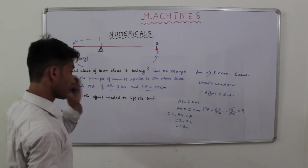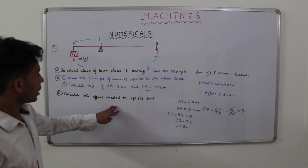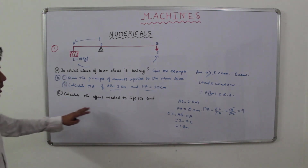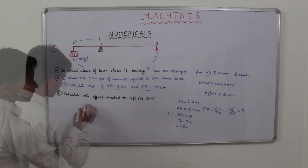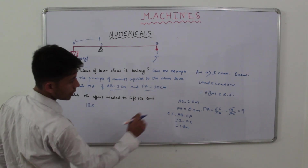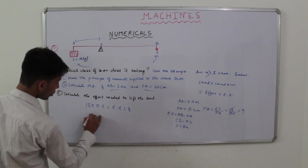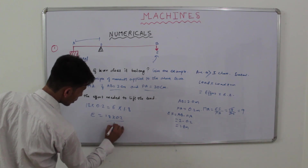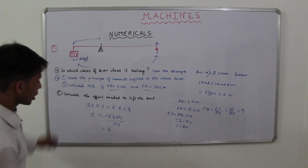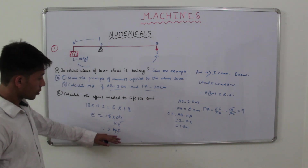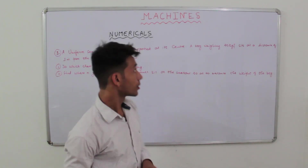Mechanical advantage equals 9. Moving on to part (c): calculate the effort needed to lift the load. Using the principle of moments: load × load arm = effort × effort arm, so 18 × 0.2 = E × 1.8, giving E = (18 × 0.2) / 1.8 = 2 kgf. The effort will have the same unit as the load.